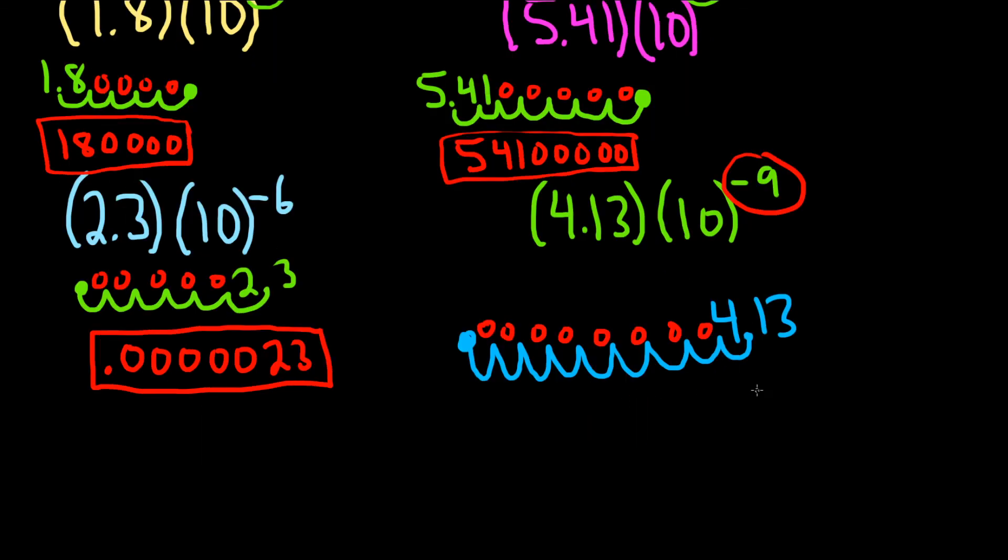Eventually you start to memorize it. Oh, negative nine, so we're going to have eight zeros. Negative ten, so we're going to have nine zeros. So you start to develop patterns, but this is a surefire way to do it as long as you can count.